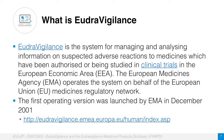What is EudraVigilance? EudraVigilance is a system for managing and analysing information on suspected adverse reactions to medicines, which have been authorised or are being studied in clinical trials in the European Economic Area. The European Medicines Agency operates this system on behalf of the European Union Medicines Regulatory Network. The first operating version was launched by the EMA in December 2001.